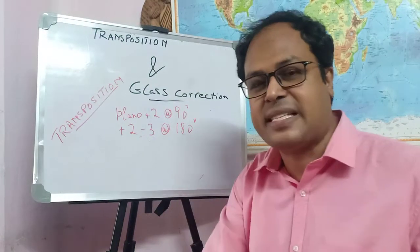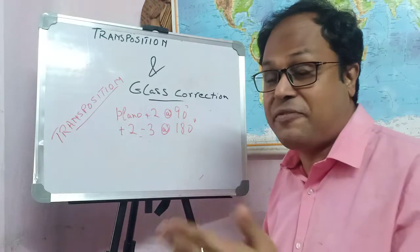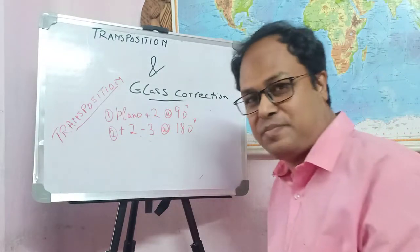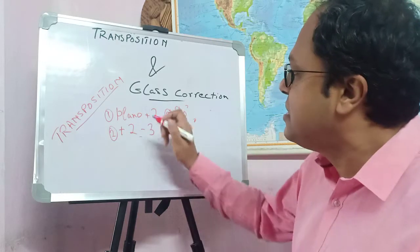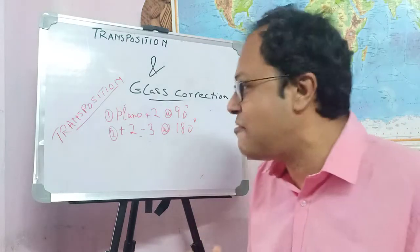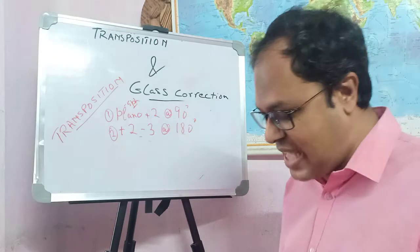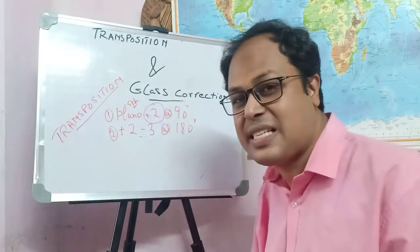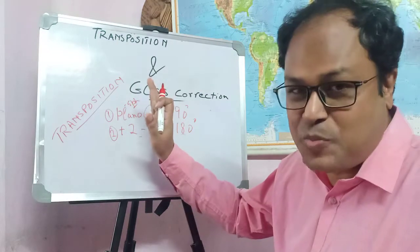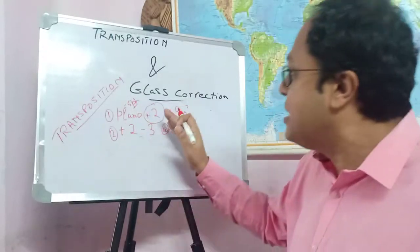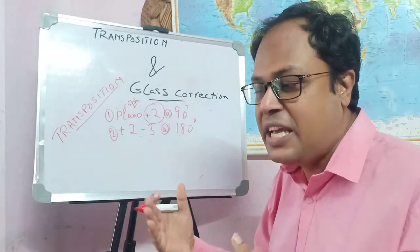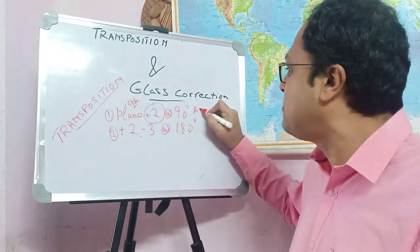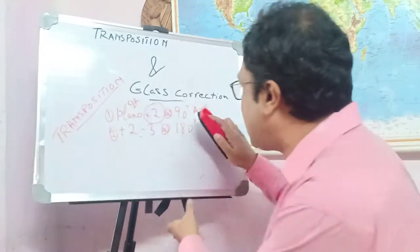When patients have astigmatism, prescriptions can be of two different types. In the first example, the patient has plano plus 2 at 90 degrees. Plano means no spherical power. But the patient has a cylinder of plus 2, meaning there is a difference in principal meridians. The plus 2 cylinder is needed at an axis of 90 degrees. This is written in positive cylinder format.